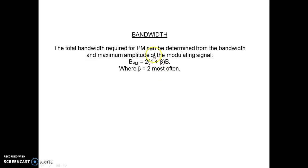The bandwidth of PM is calculated with the formula: Bandwidth(PM) = 2 × (1 + β) × B, where B is the bandwidth of the message signal. For PM, beta is almost always greater than or equal to 2. In comparison, for FM, beta may be less than 1 for narrowband FM, or greater than 2 for wideband FM. But in phase modulation, beta is always greater than 2.